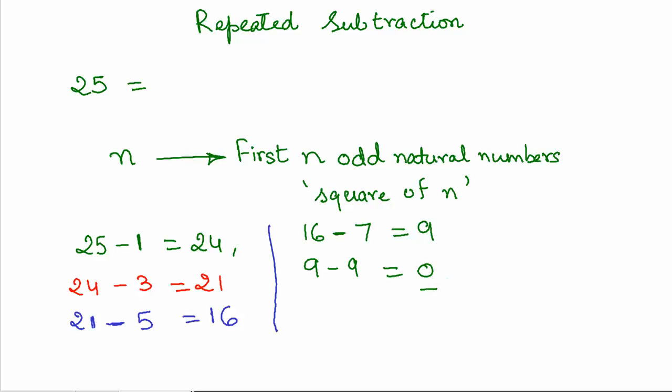As you can see, we subtracted 5 times with the odd numbers 1, 3, 5, 7, and 9. So 1 + 3 + 5 + 7 + 9 = 25. This is the sum of first n odd natural numbers, which is 5. Hence, the square root of 25 is 5, and you can do this for other numbers.